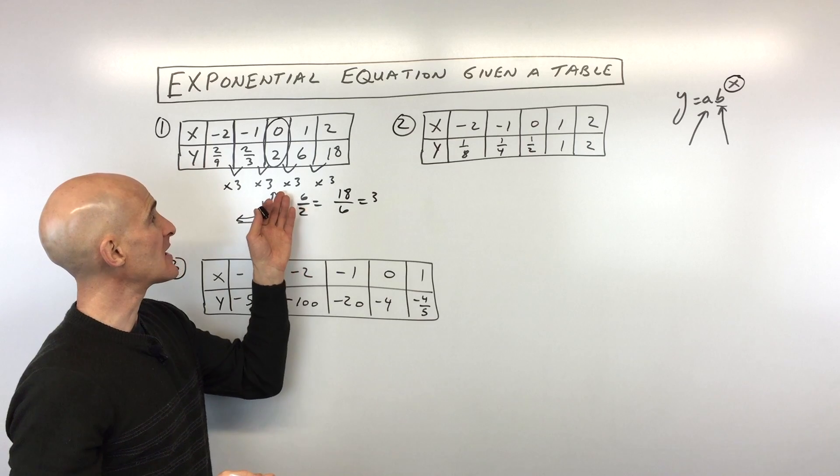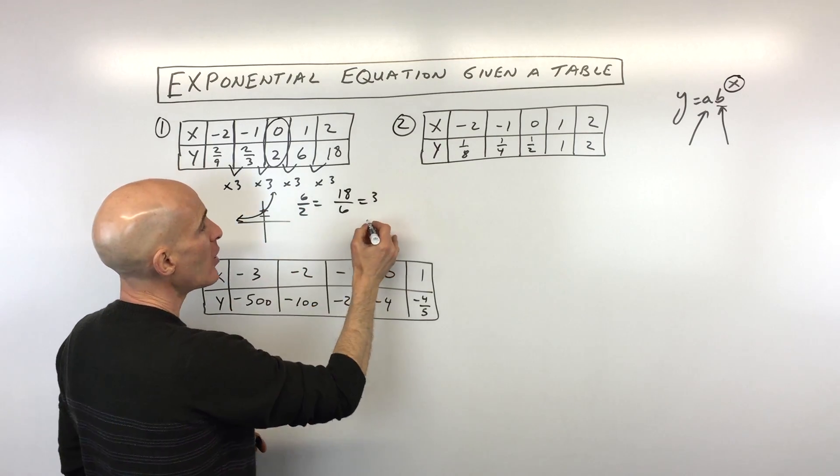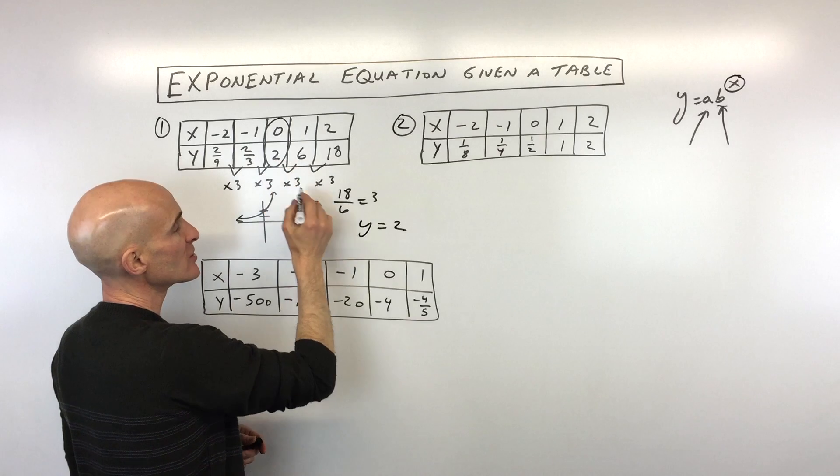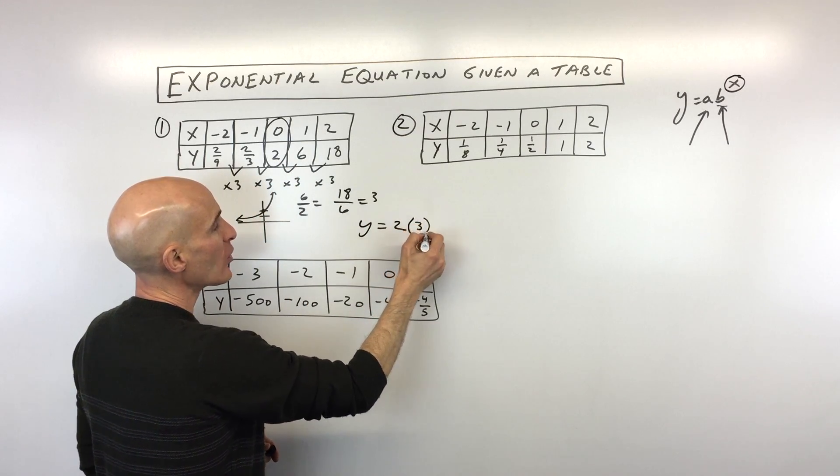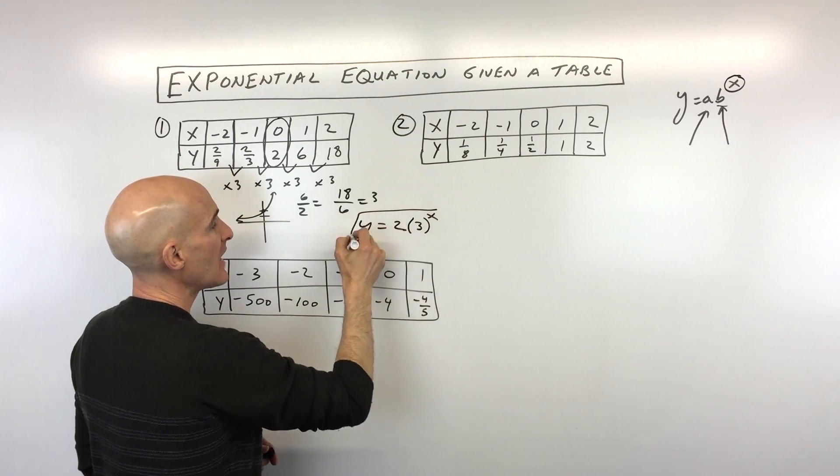That's exponential growth because that base is greater than one. If we put it all together, we're getting y equals two—that's our initial condition, that's our a—and then we're multiplying by three, that's our base. And that's our formula.